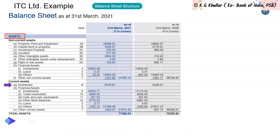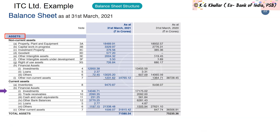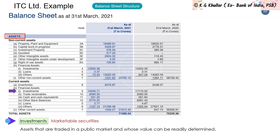Under current assets, the first type is Inventories — physical stocks held by a company in the form of finished goods, work in progress, or raw materials. Next are Investments, also known as Marketable Securities — financial assets traded in a public market whose value can be readily determined. Examples include treasury bills, notes, bonds, and equity securities.